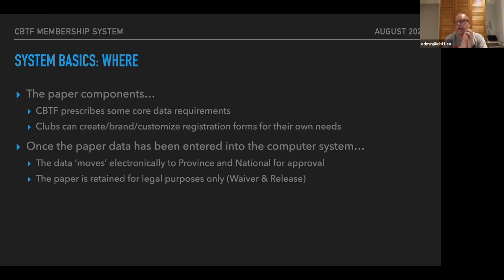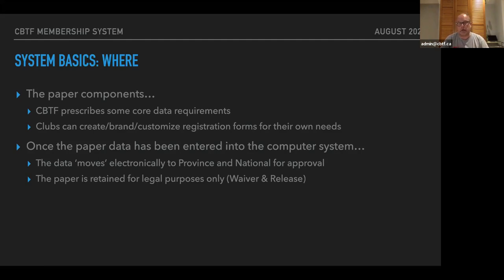The paper components are flexible. CBTF has some very basic core data requirements needed in order to have a member. At the very minimum, all CBTF requires is a name and an email address. If the member is an athlete, then there's additional information needed: date of birth, gender, and citizenship. There's other information we can collect, but in terms of the absolute bare minimum, it's name and email, plus the athlete information if it's an athlete type membership.